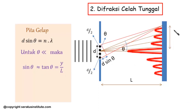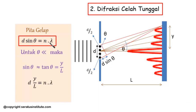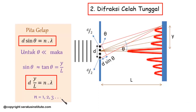Yang mana tan teta itu tidak lain adalah sisi depan sudut dibagi sisi samping sudut, yaitu Y per L. Sehingga rumusnya bisa dituliskan D × Y per L sama dengan N lambda. Ini adalah formula yang kita gunakan untuk difraksi celah tunggal. Bisa pakai D sin teta = N lambda, atau D × Y/L = N lambda, kalau diketahui jarak antara celah dan layar.